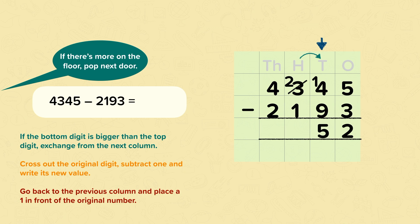Then we continue into the hundreds: two subtract one is just one. And into the thousands: four subtract two is two. So our answer is 2,152.